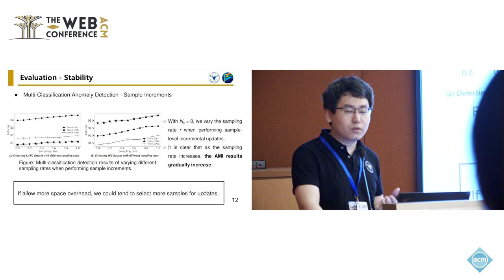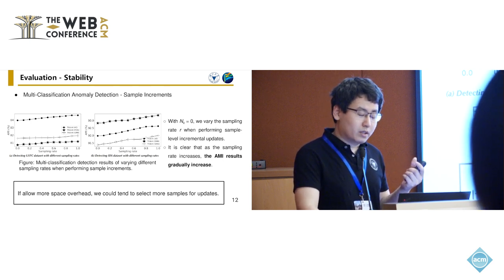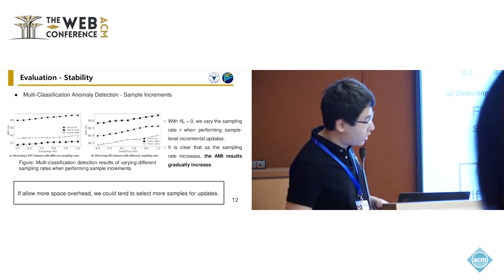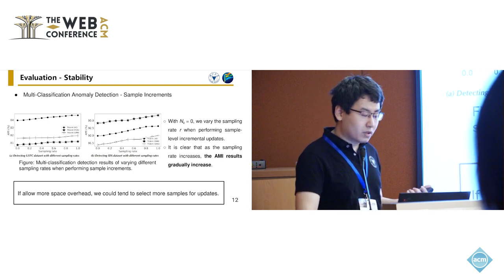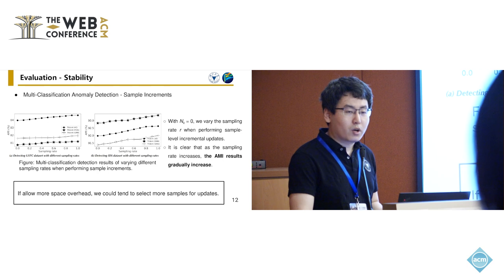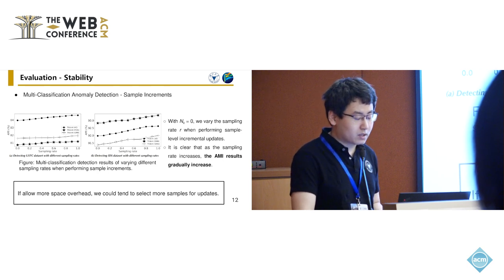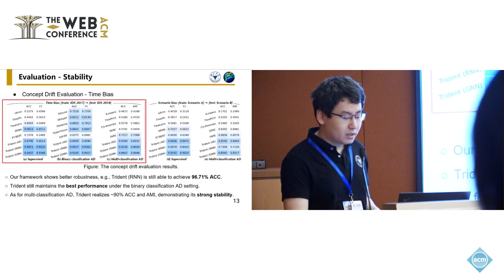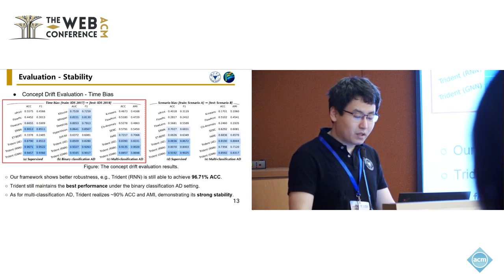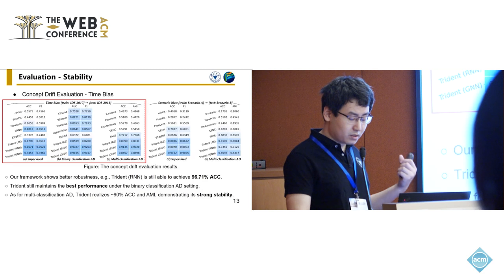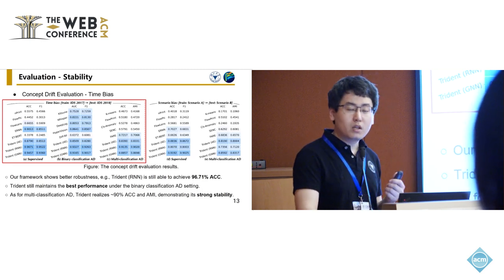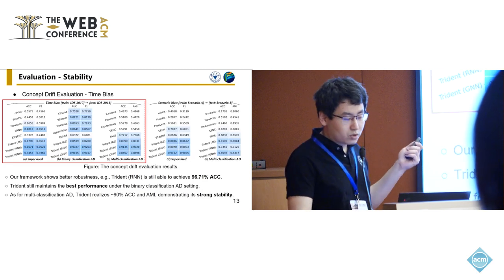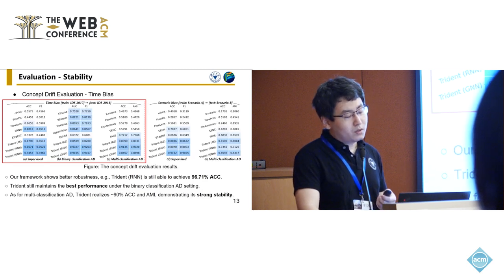For the sample-level incremental update, we tested different sampling rates. As the sampling rate increases, the AMI results gradually improve, so if we have more space overhead available, we can select more samples for updates. In addition, we evaluate Trident under concept drift, including time bias and space bias. The time bias results show better robustness against time-drifted datasets, such as training on IDS 2017 and testing on IDS 2018.